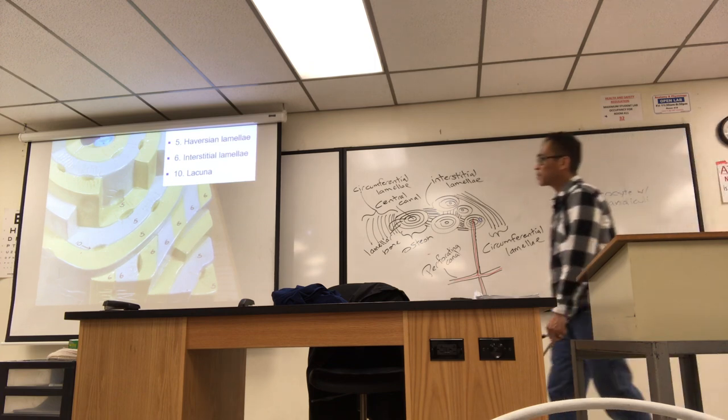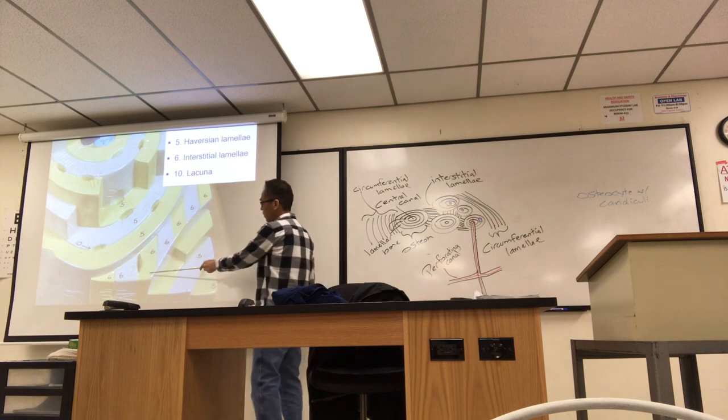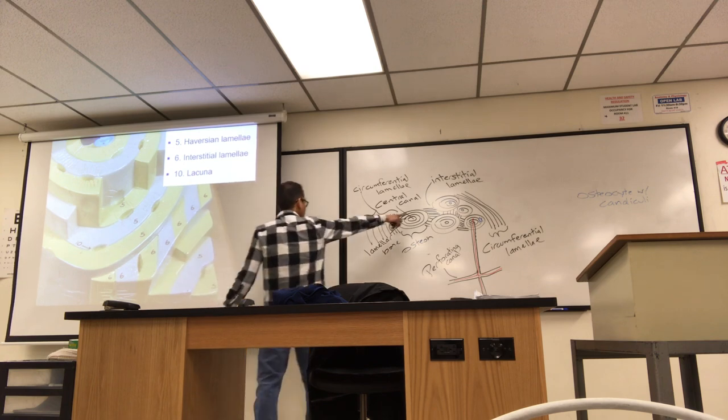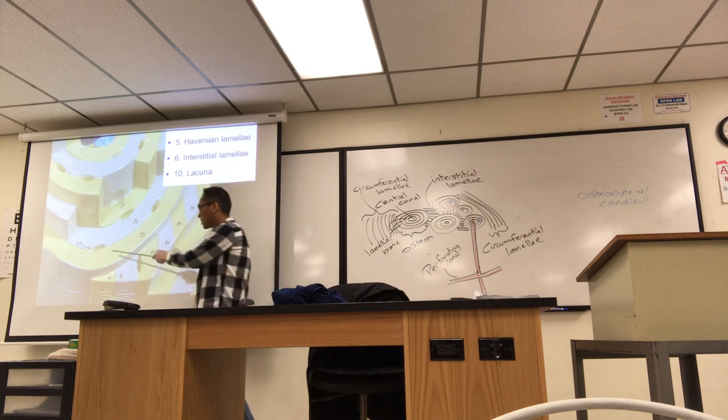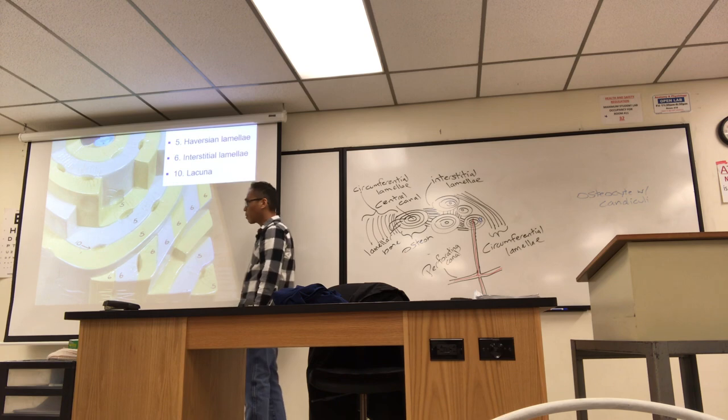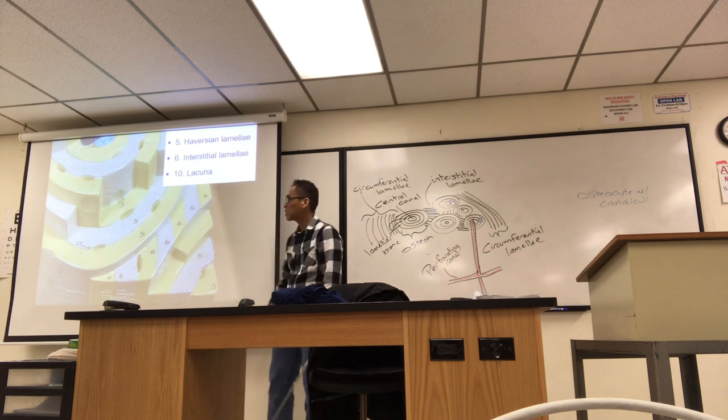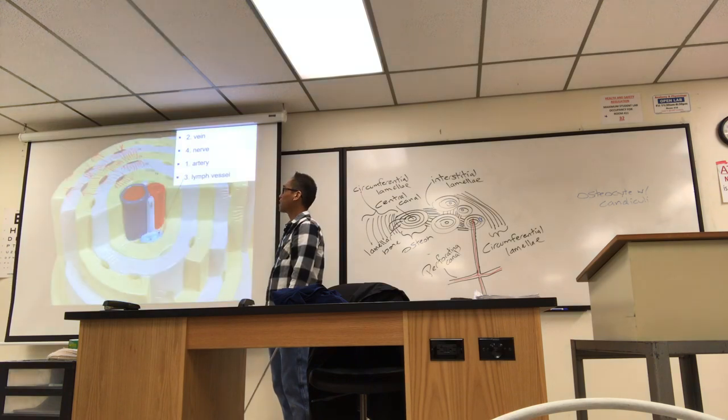So they got five and six and ten there. Five is just the lamella from the osteon. But six is where I kind of illustrated it as the interstitial lamella. Ten, that little space there. And the space, lacuna. If you don't see a cell there, don't call it osteocyte. Call it lacuna.